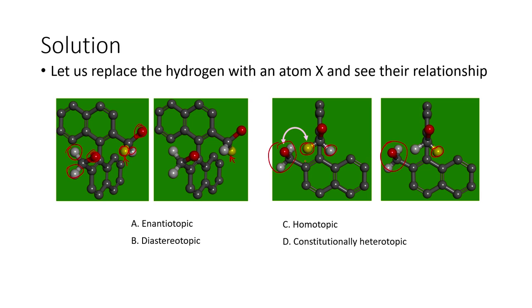There is no object-mirror image relationship because in both cases the hydroxy group is present only on one side — on the left-hand side. With respect to that, one hydrogen atom is in close proximity to the hydroxy group and another is away — no object-mirror image relationship. When there is no object-mirror image relationship, we do not even need to look into non-superimposability. Also, this molecule is chiral in nature.